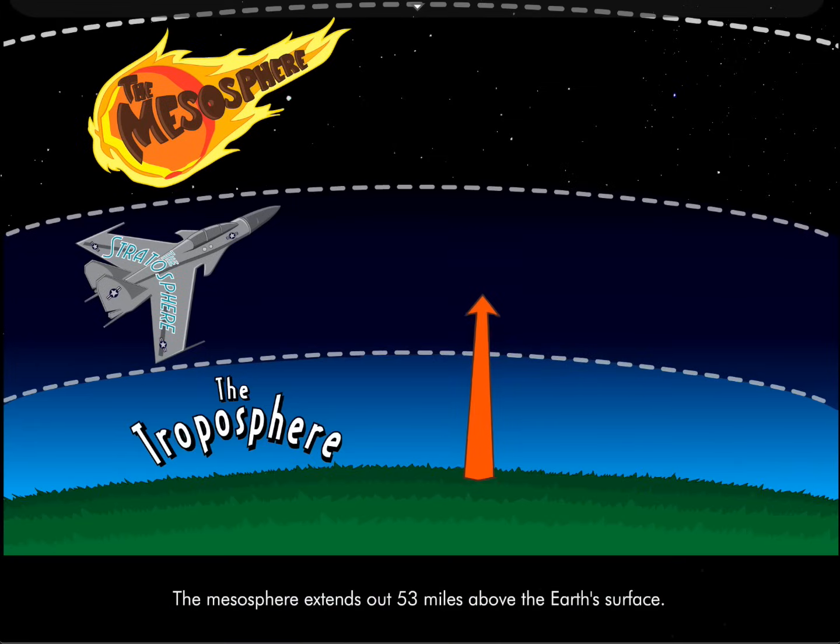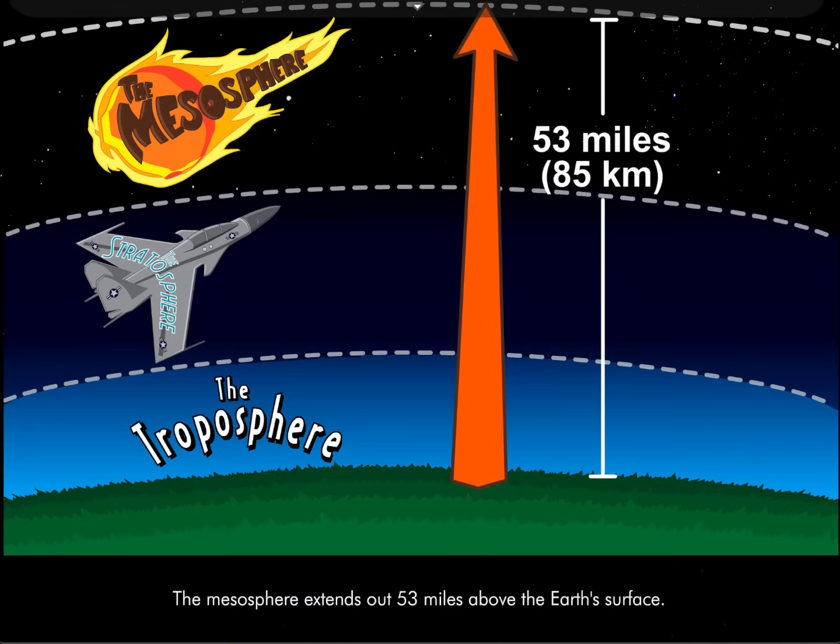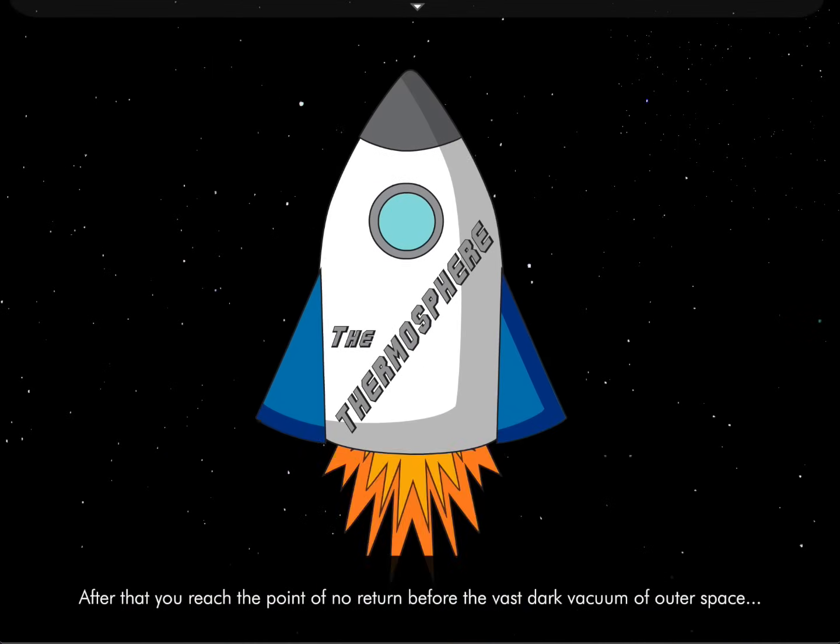The mesosphere extends out 53 miles above the earth's surface. After that, you reach the point of no return before the vast, dark vacuum of outer space. The thermosphere!